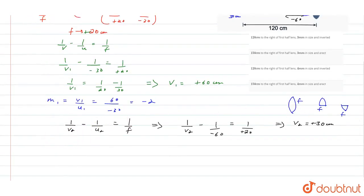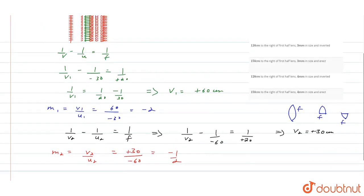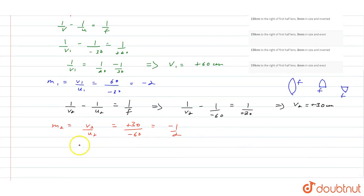So magnification, the second case here is m2. m2 is equal to v2 by u2, that is equal to 30 divided by minus 60. This is minus 1 by 2. So total magnification formula: m is equal to m1 m2. This is equal to minus 2 into minus 1 by 2. This is equal to 1. This is our magnification.